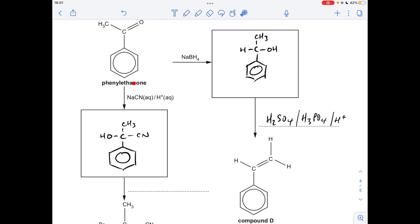Moving down this side now, so if you react this phenylethanone with a mixture of sodium cyanide and H plus ions, you're effectively reacting it with HCN, hydrogen cyanide, and you're going to make a hydroxynitrile. So we get this here.